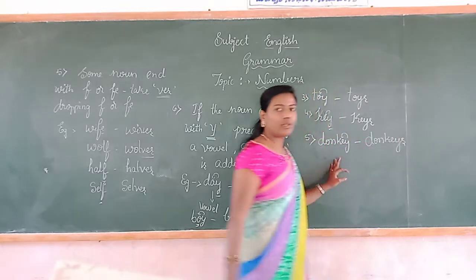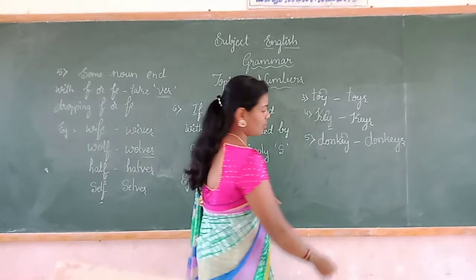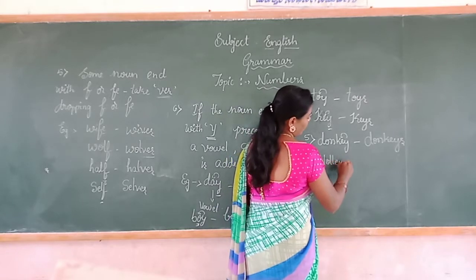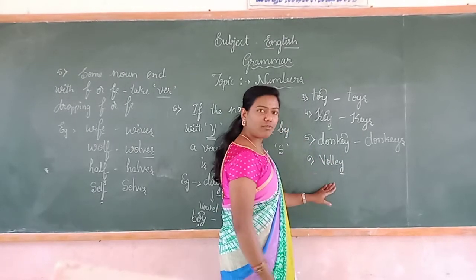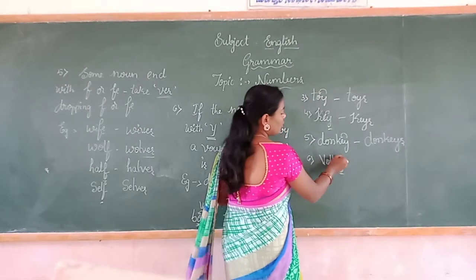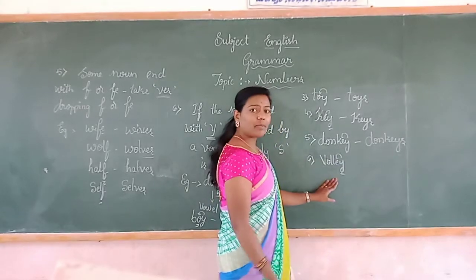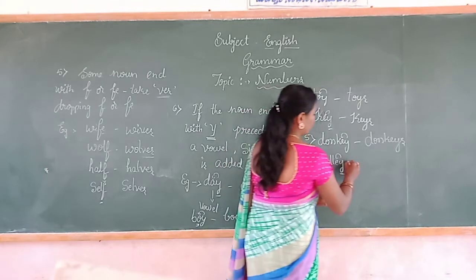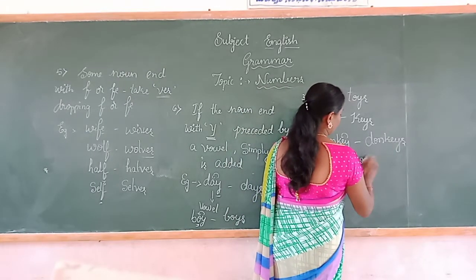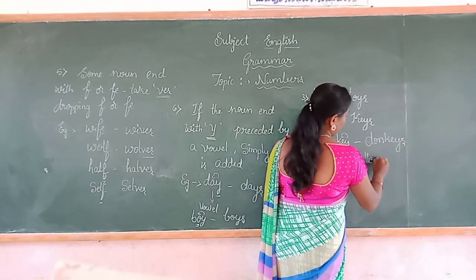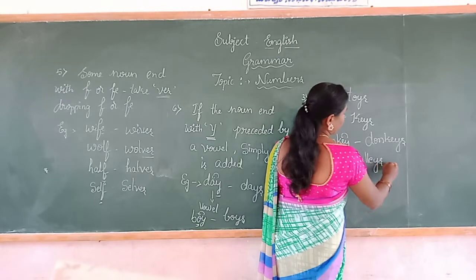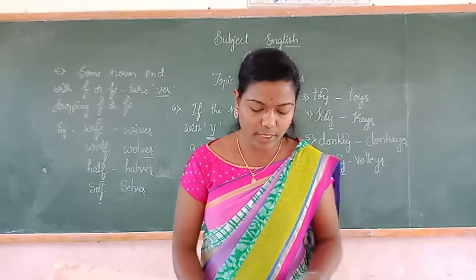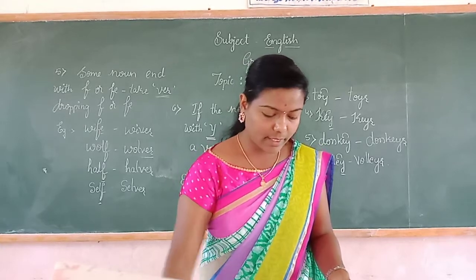Last example for rule 6: 'valley' — this word ends with Y, the preceding letter is E which is a vowel, so we add only S in plural form — 'valleys.' Clear?